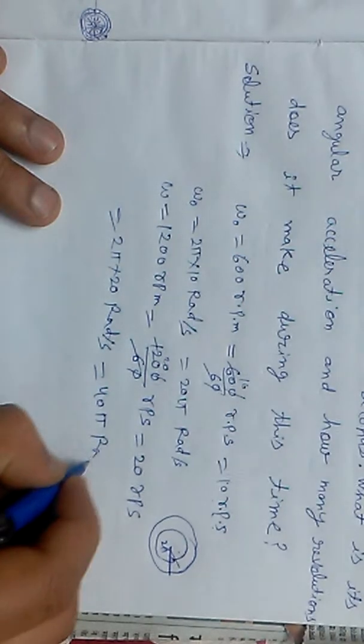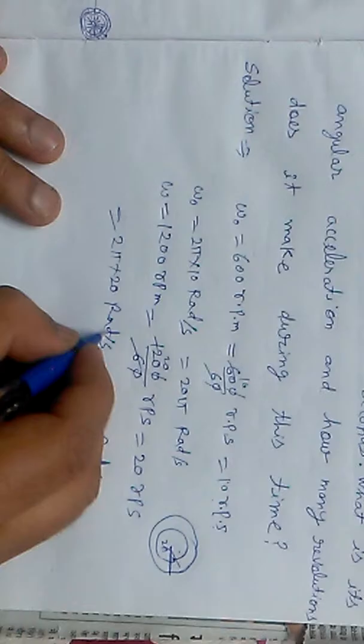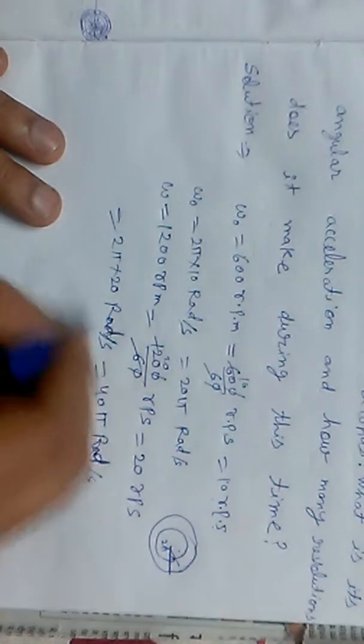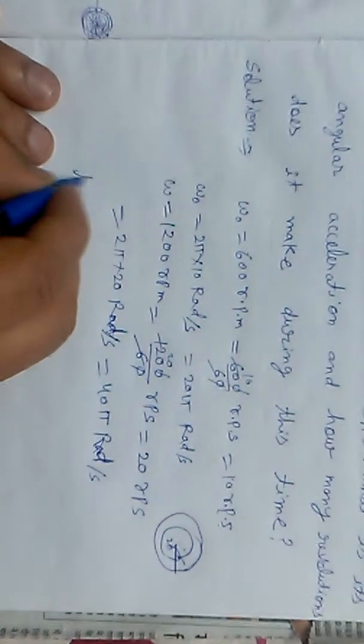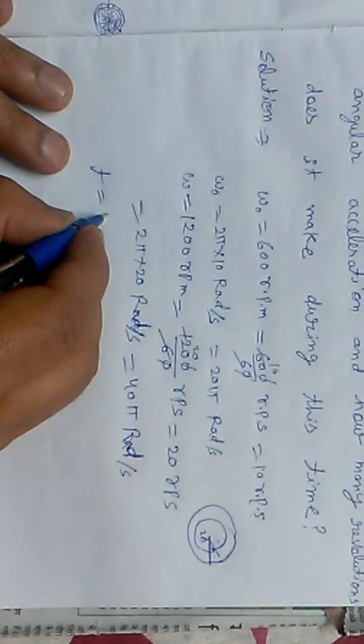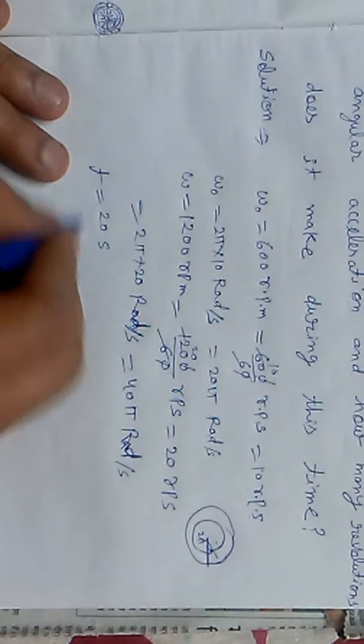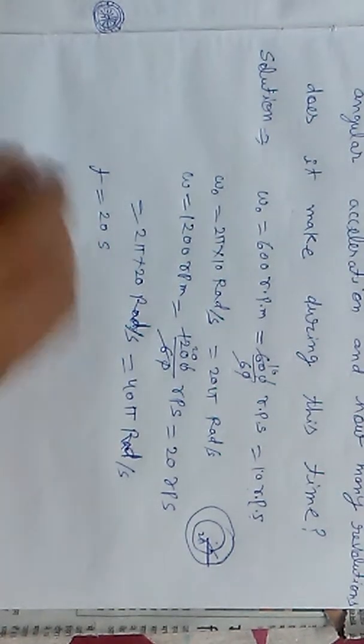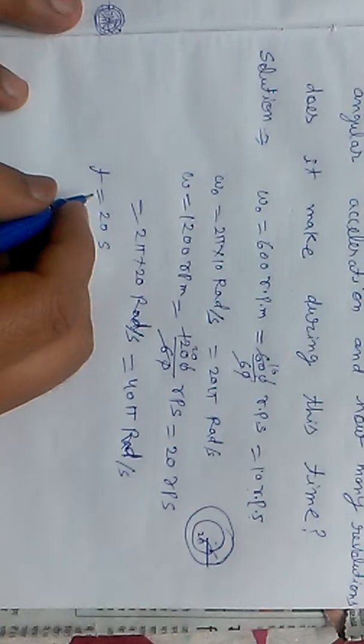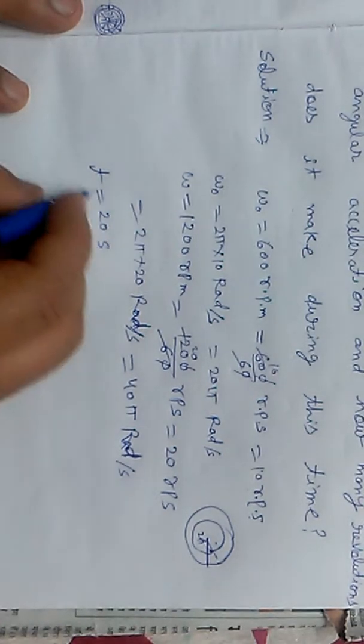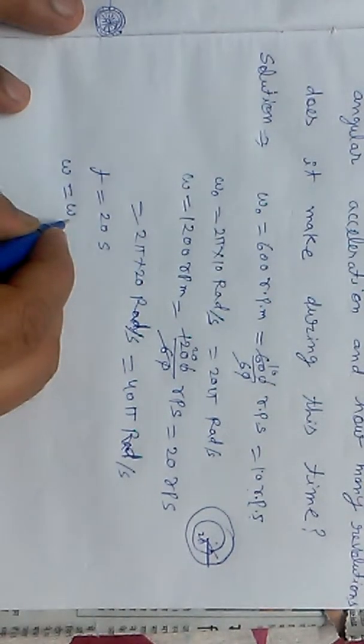So omega equals 40 pi radians per second. Time t equals 20 seconds. Now we have the first part, which asks how much angular acceleration.